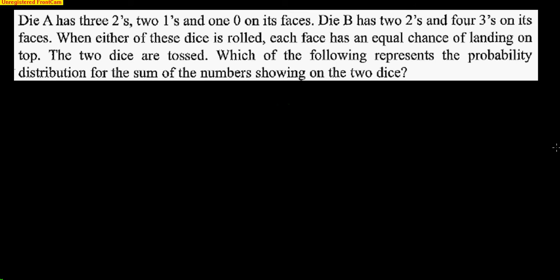Die A has three 2s, two 1s, and one 0. Let me think about die A here. There are three 2s, so that's 3 out of 6 are 2. There's two 1s, so that's 2 out of 6 that are 1. And there's one 0, so there is 1 out of 6 that are 0, because a die has 6 sides. Now I got die B here. Die B has two 2s, so there's a 2 out of 6 chance of getting a 2. Four 3s, so there is a 4 out of 6 chance of getting a 3. Those would be the 6 sides for die B. When either of these dice is rolled, each face has an equal chance of landing up. The two dice are tossed, which represents the probability distribution for the sum. So I'm thinking about the sum here and what could possibly happen.